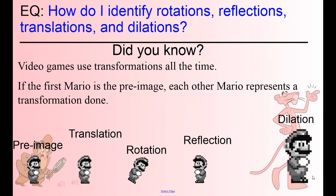Did you know that video games use transformations all the time? For example, if the first Mario is the pre-image — that's this guy — the pre-image is like the original. The prefix 'pre' means before. So before anything happened, we have this pre-image. Each other Mario represents a transformation. A translation is basically if he walked from one place to another — it looks exactly the same, just a different location on the screen.